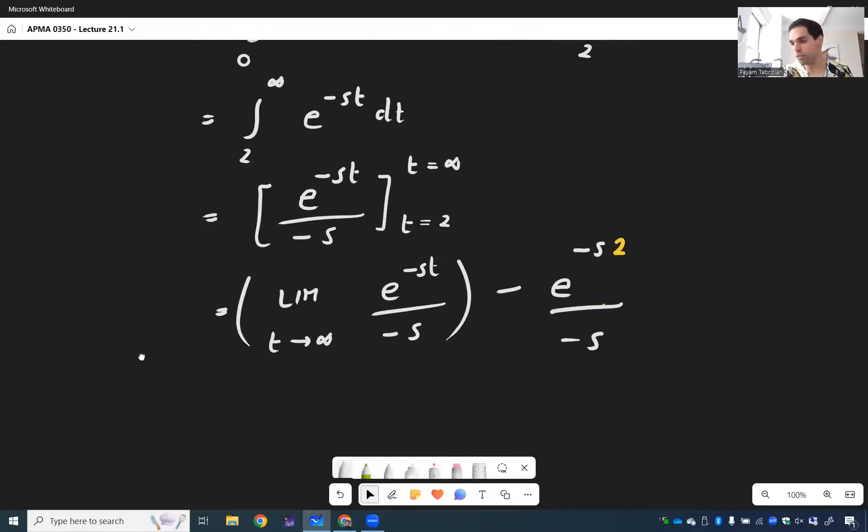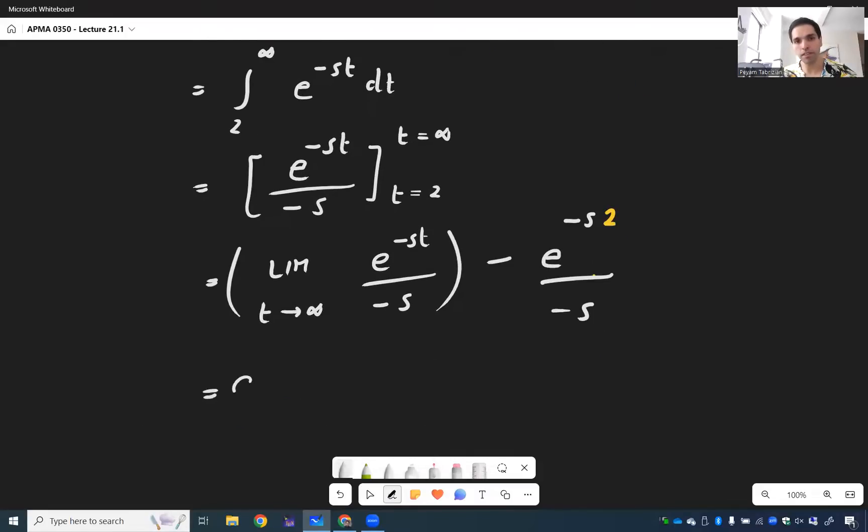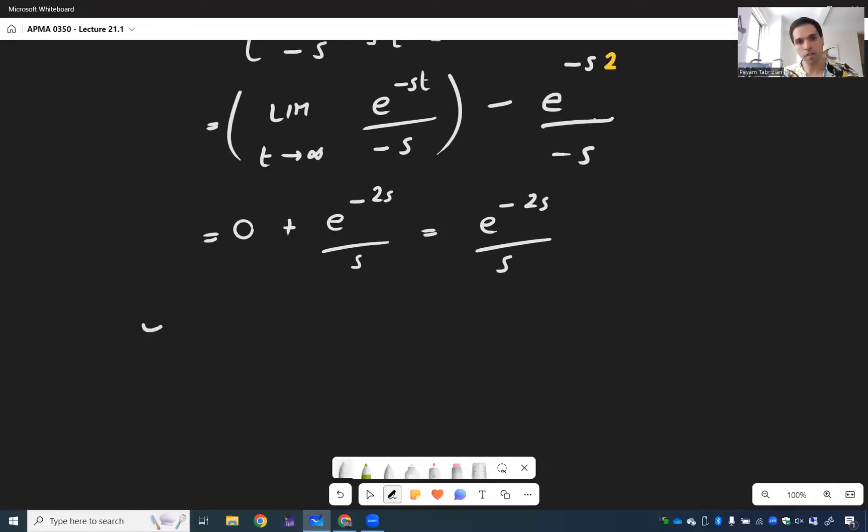And in the end, once again, this limit is zero. So zero plus E to the minus 2S over S. So in the end, we get E to the minus 2S over S. So in other words, the Laplace transform of U2 of T is E to the minus 2S over S.